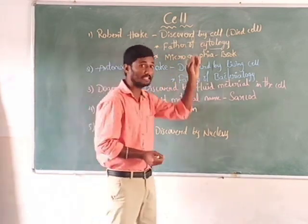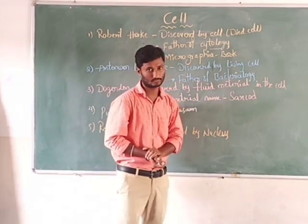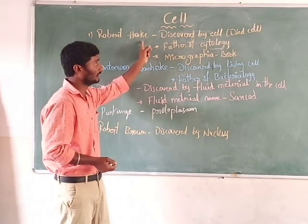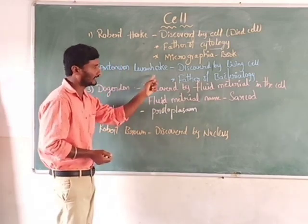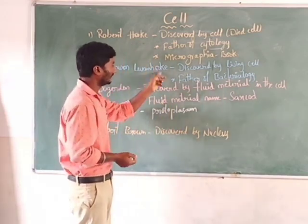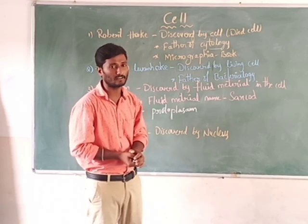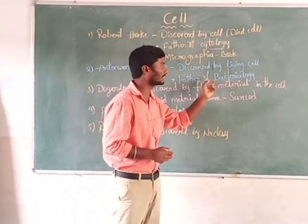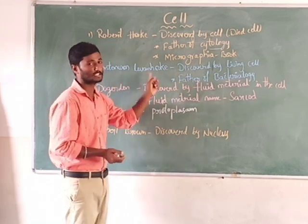Robert Hooke discovered the cell, but it was a dead cell. Antonie van Leeuwenhoek discovered the living cell. Remember this differentiation: Robert Hooke discovered the dead cell, but Antonie van Leeuwenhoek discovered the living cell — that is the main difference. Antonie van Leeuwenhoek is generally called the Father of Bacteriology, because he studied the structure and functions of bacteria. His first living cell was introduced by Mr. Antonie van Leeuwenhoek.